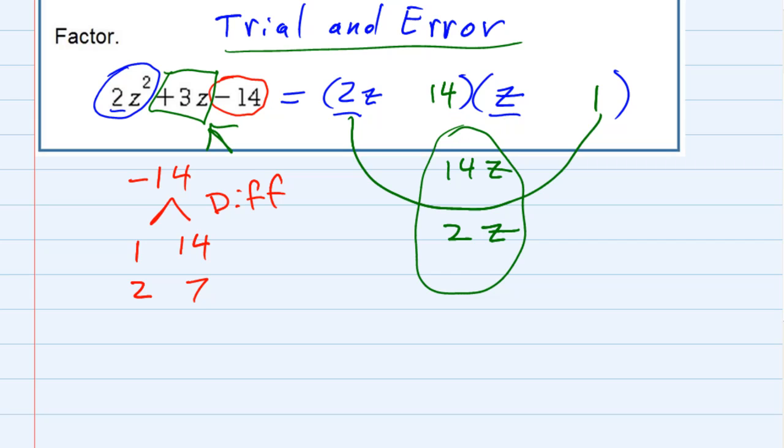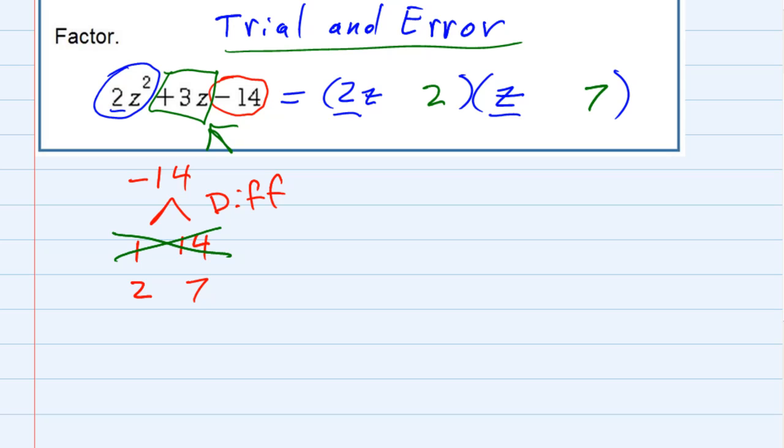So we had an error again. We had a combination that did not work. And we've tried both ways. We've tried 1 and 14 and 14 and 1. Neither of those worked. We move on to the next possibility, which is 2 and 7.